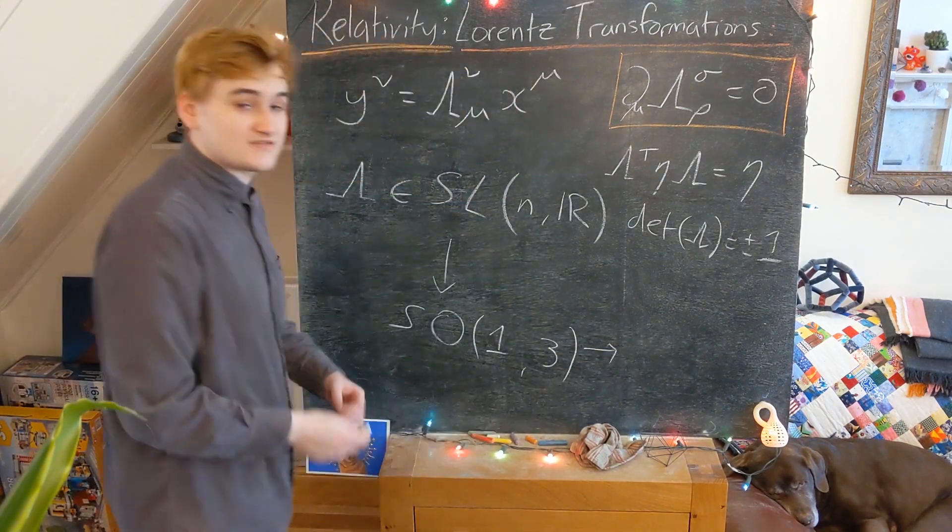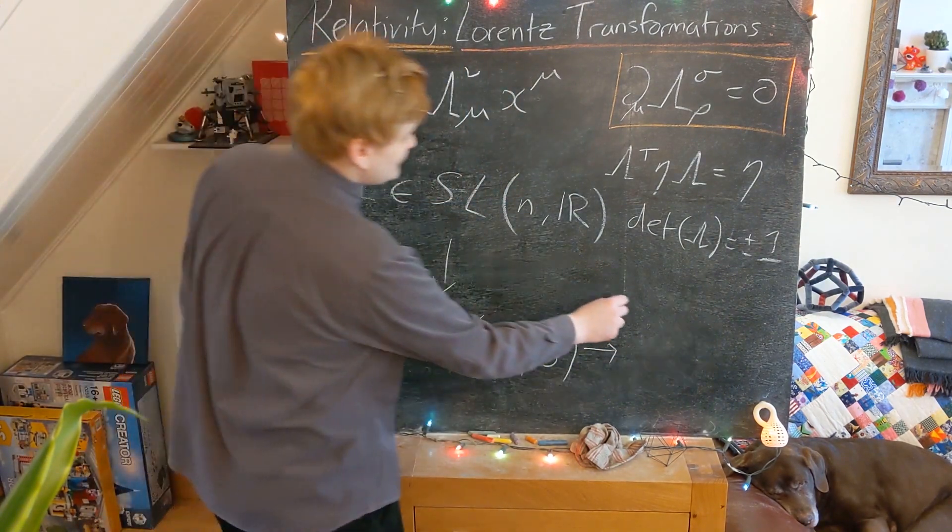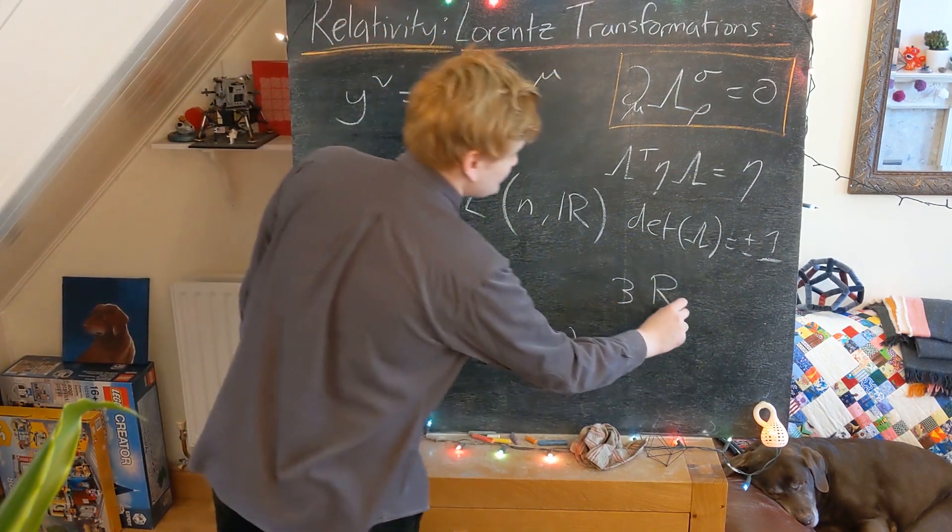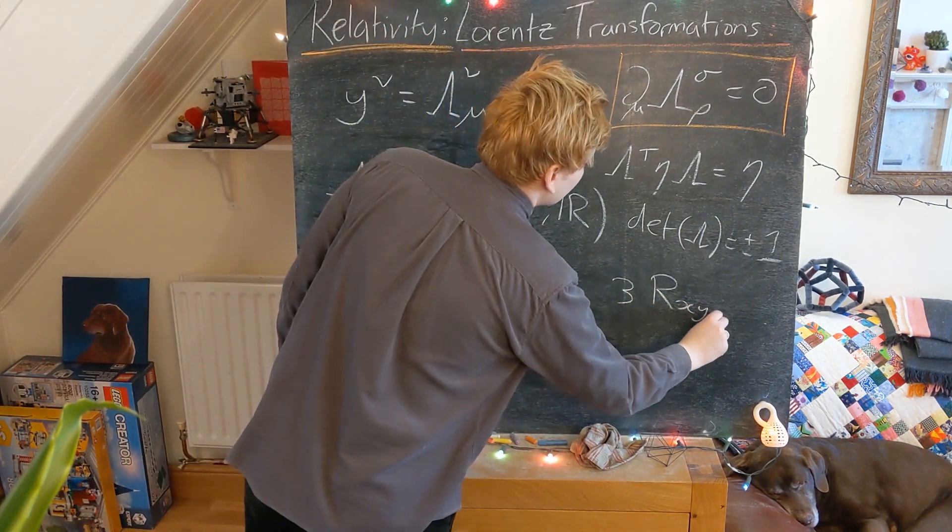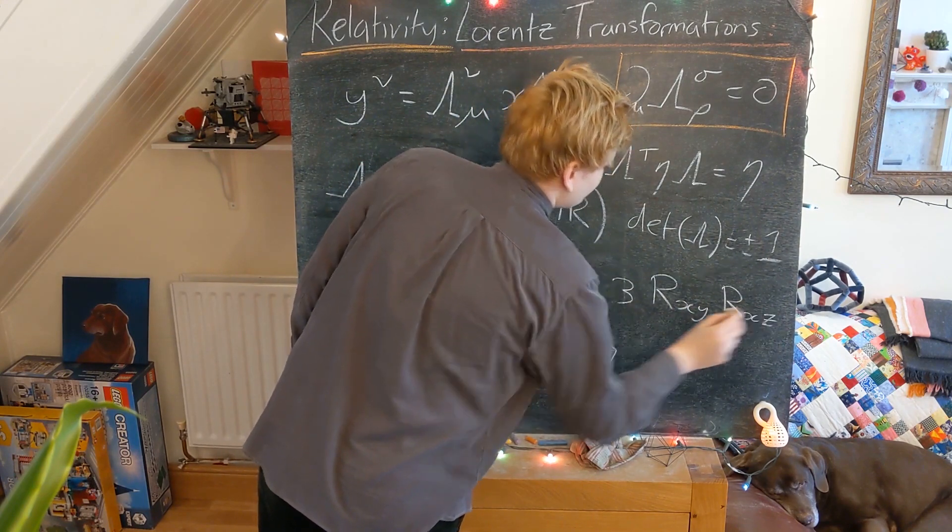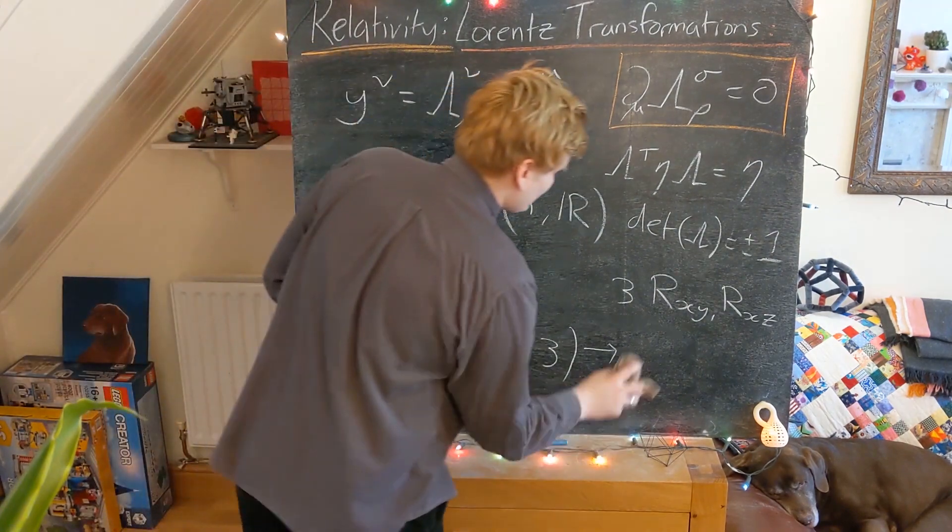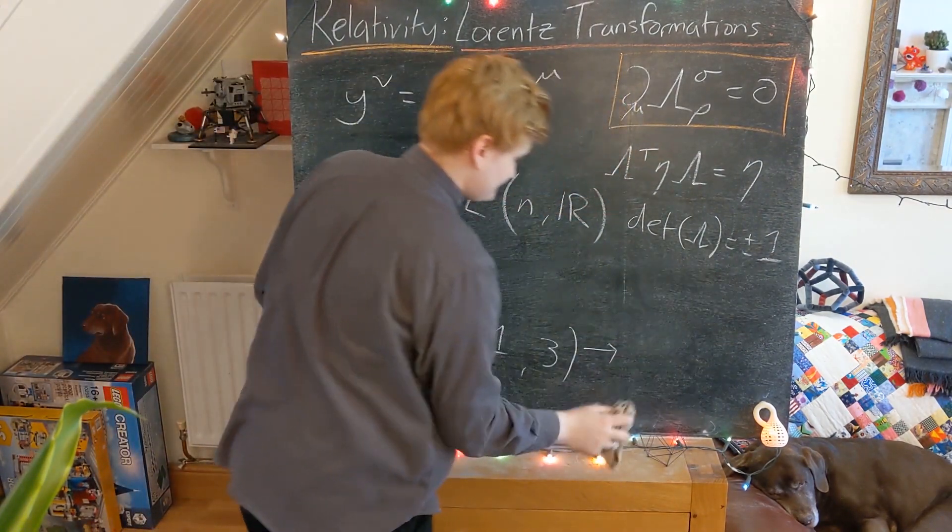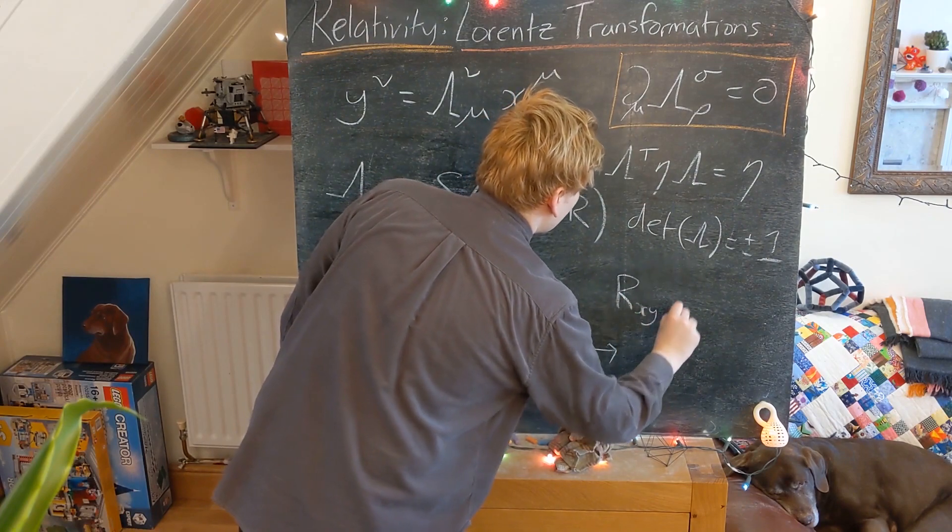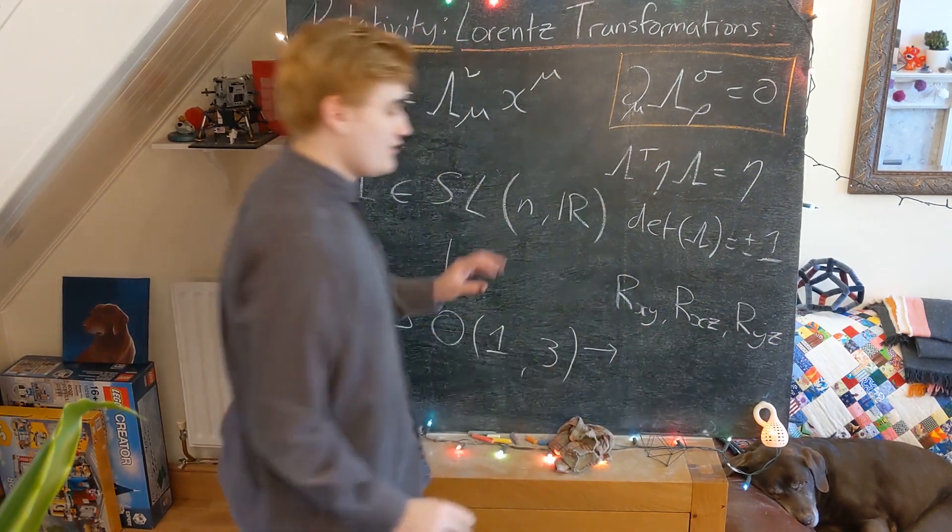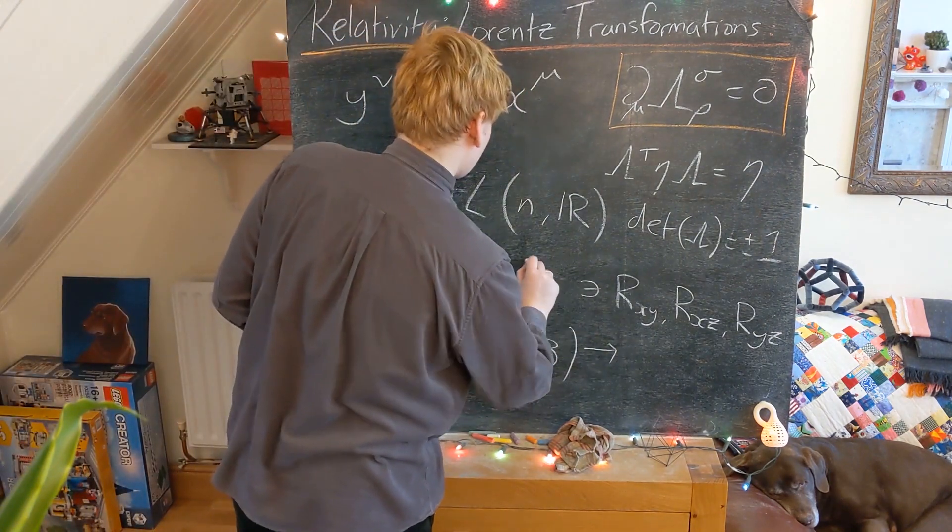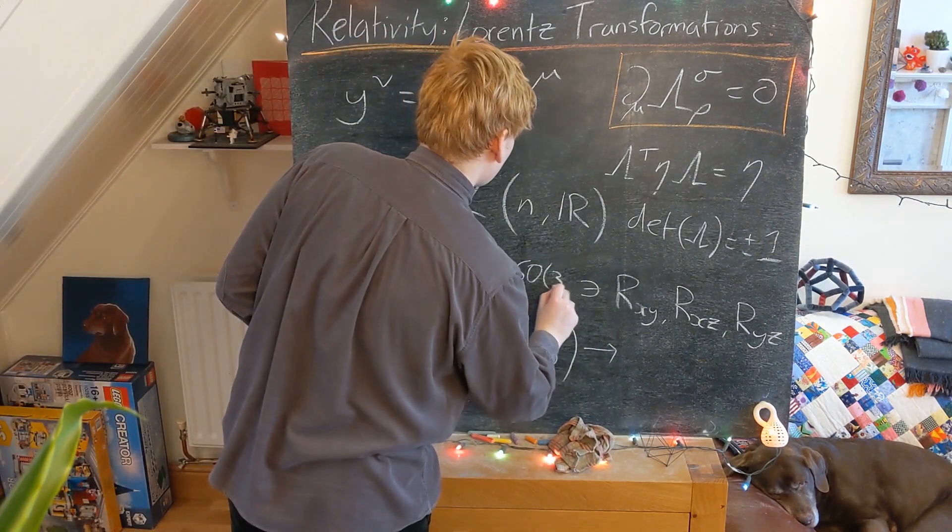And as we saw, or as we discovered, these are essentially the three rotation matrices, which give rotations around the coordinate, or rather rotations in the coordinate planes. So we have our R_x, R_y, R_z, three rotation matrices, which, if you'll recall, corresponded to SO(3).